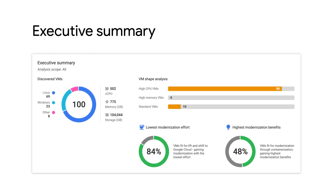It also shows you what percentage of your existing VMs can be migrated using a lift and shift strategy at a low effort cost and what percentage are ripe for a higher value modernization effort, meaning containerizing and running on Kubernetes or serverless. This executive summary alone gives you the factual information that is needed to start planning how your migration strategy might look.